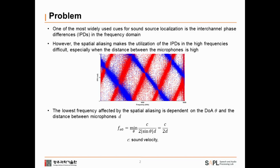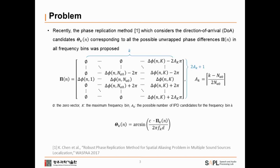the conventional method uses IPD below the lowest frequency bin affected by spatial aliasing or minimum distance between microphones. Recently,